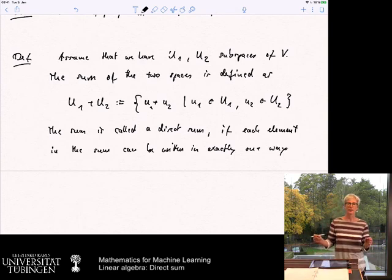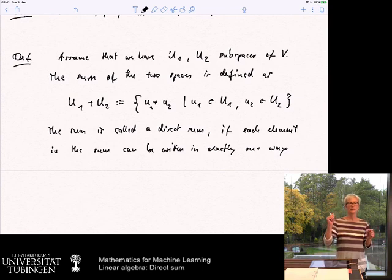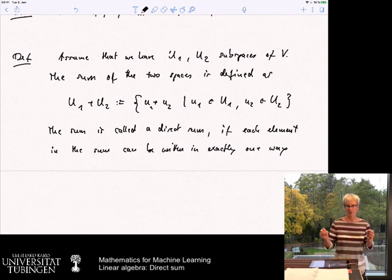If there is an element in the sum, it is the sum of u1 plus u2. And this u1 and u2, these are unique. So there are no other vectors that would also produce the resulting sum.